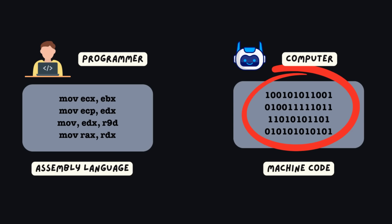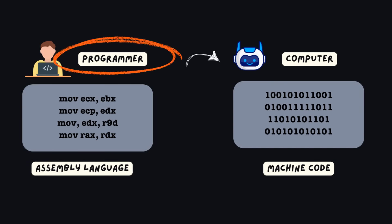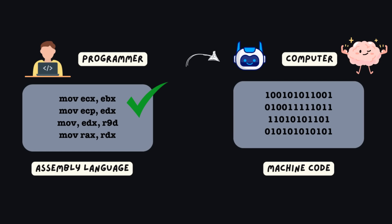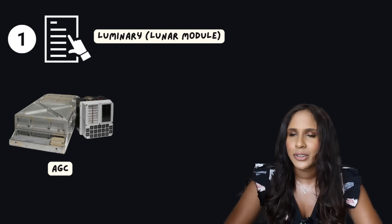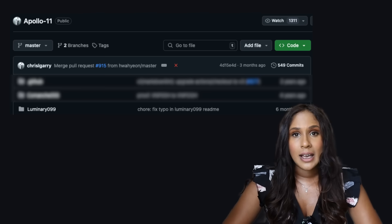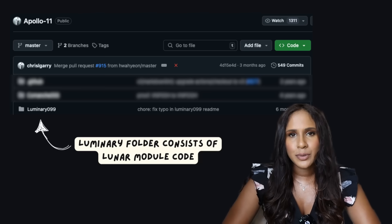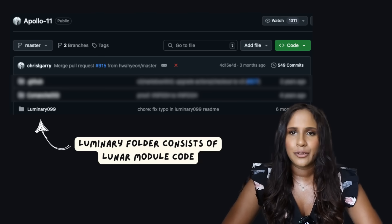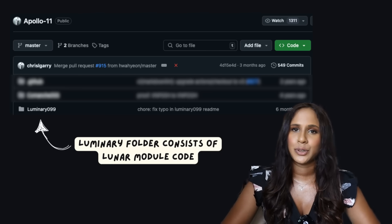Assembly is a programming language that lets the programmer give very detailed and specific instructions — almost like speaking directly to the computer's brain — but it's much easier to understand than raw machine code, which is essentially just binary, a bunch of ones and zeros. The actual software for Apollo 11 consists of two major programs. Luminary ran on the AGC inside the lunar module, guiding it during the lunar descent and landing. In the GitHub repo, all the luminary code is in the Luminary 099 folder.